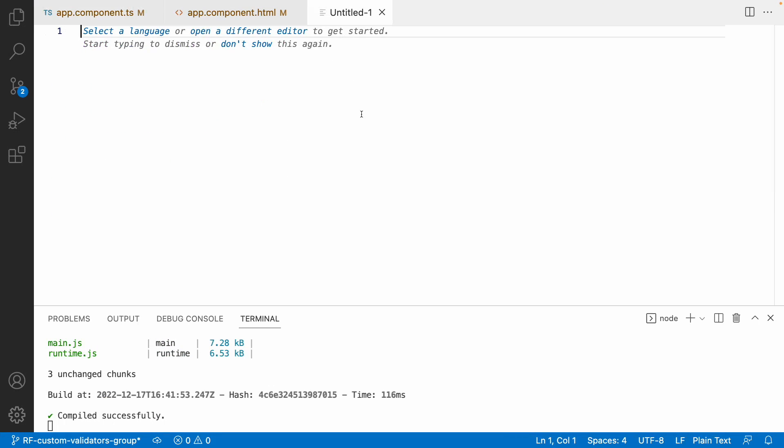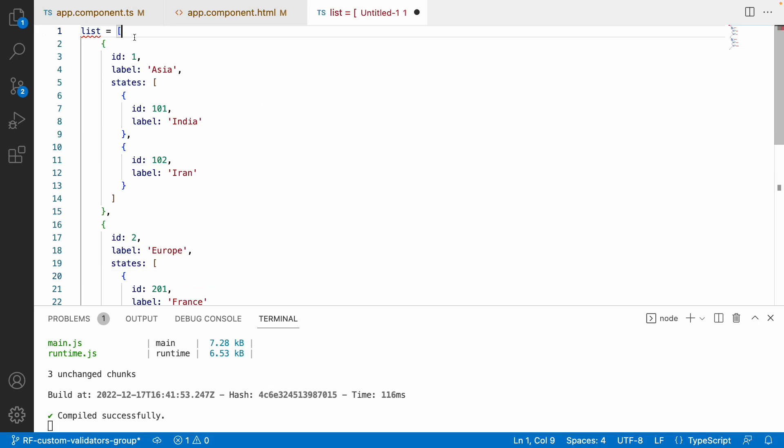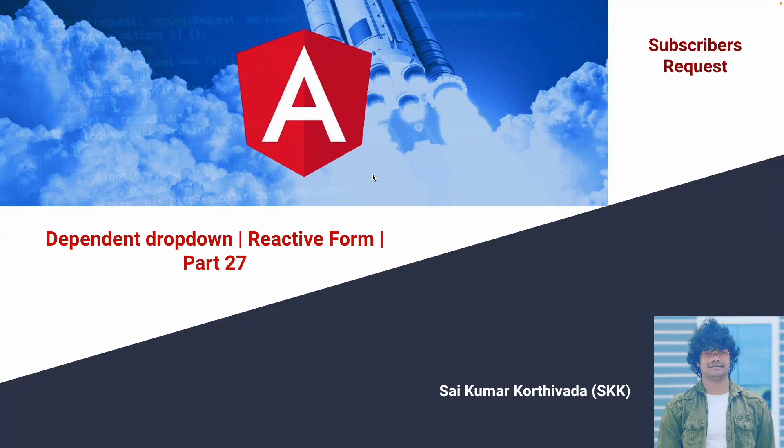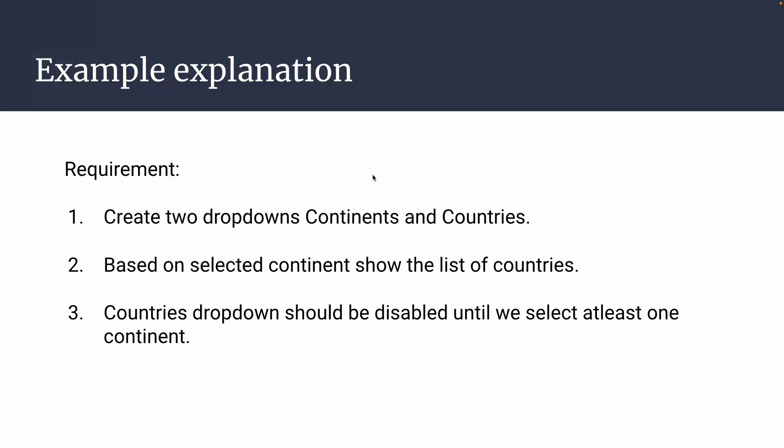Let me explain the scenario first. The target is to create two dropdowns — one for continents and one for countries. Based on the selected continent, we show the list of countries. The countries dropdown should be in a disabled state until at least one continent is selected.